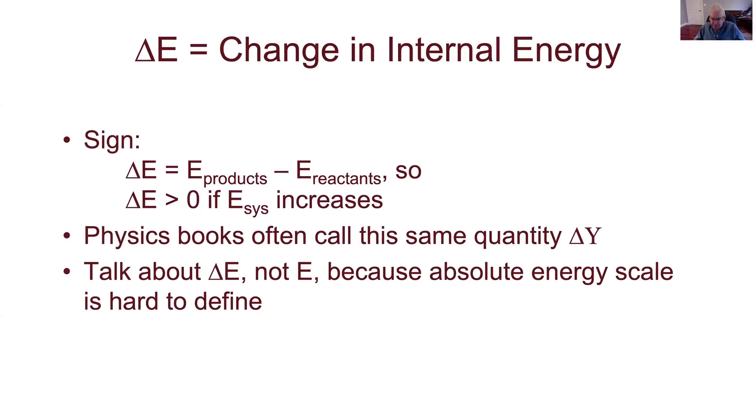Oh gosh, delta Y is not right. That means somehow a U turned into a Y. I apologize for that profusely. It must be a font switch or something like that. But delta E is this change in internal energy. It's the products minus the reactants.